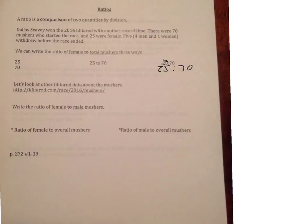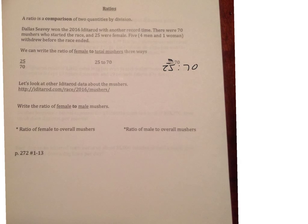We're going to look at some other Iditarod data about the mushers later. I want you to write the ratio of female to male mushers right here. So female to male we had 25 to 45. We always want to simplify that. So we're going to get 5 to 9. You could also write it as 5 to 9 that way.